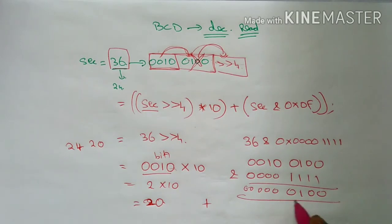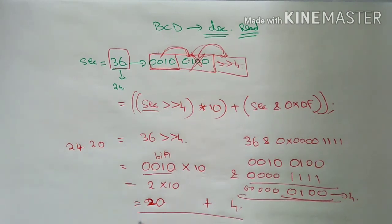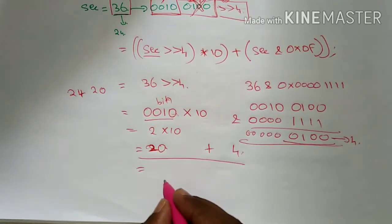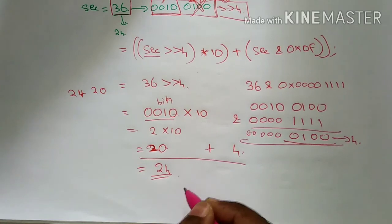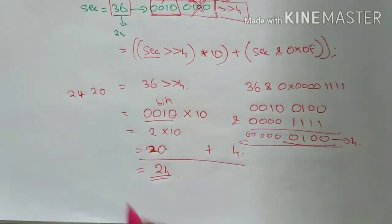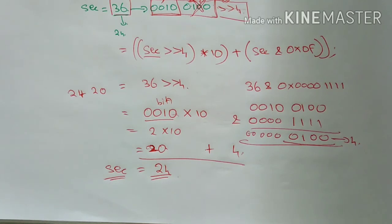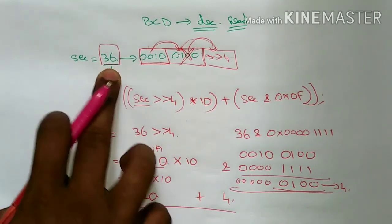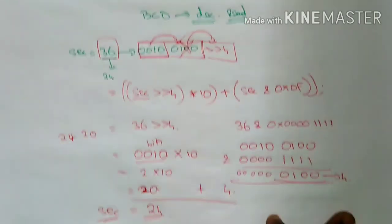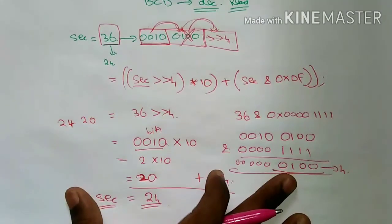24 plus 4 is going to be 24. So this is the answer — the answer is 24. So the answer is 36. So the answer is 36 — if you apply this formula, I will be able to decide it in 24. So it's the formula.